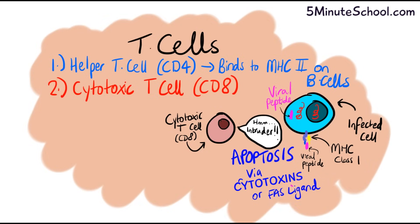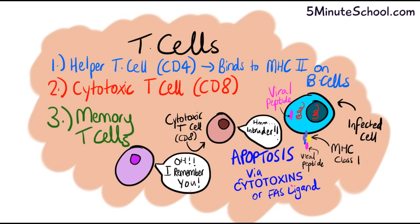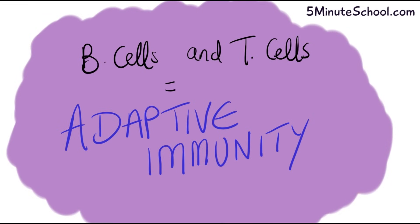We also have memory T cells — the main thing to know is that they can replicate very fast and initiate their response very rapidly if they've encountered the antigen before. Finally, both B and T cells are part of the body's natural adaptive immunity, meaning they're part of a specialized network of cells that specifically respond to pathogens and fight off infections.